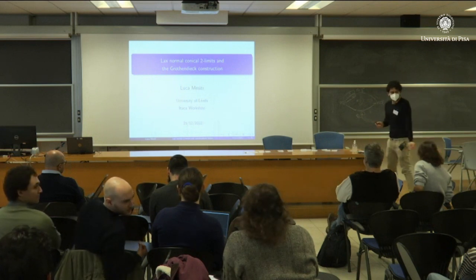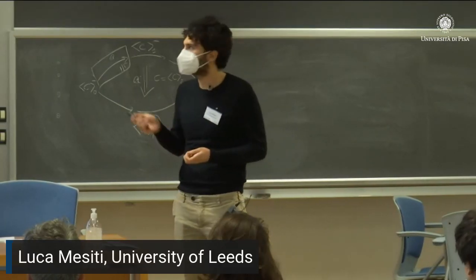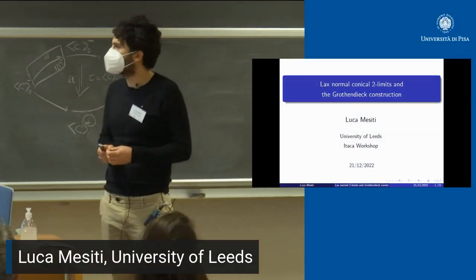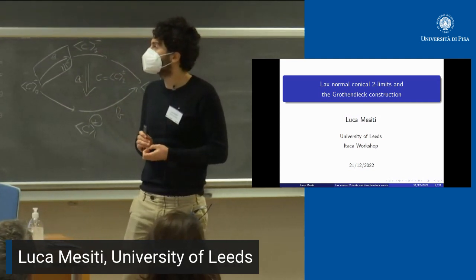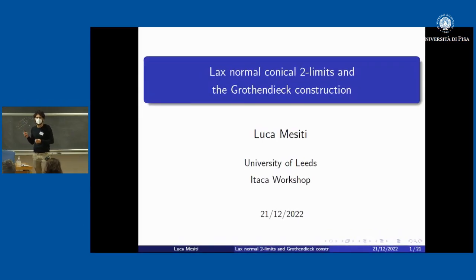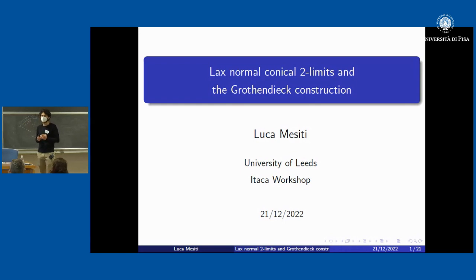Thank you very much to the organizers for the opportunity to speak here, and to all of you for listening. This talk is based on a paper that will appear soon. In short, I will present the problem of conicalizing weighted limits in the enriched setting and show an essential solution in the 2-categorical case, producing the two concepts that appear in the title simultaneously.